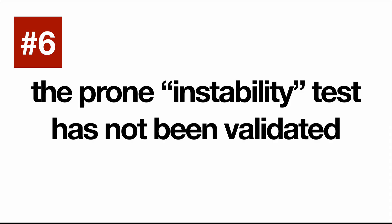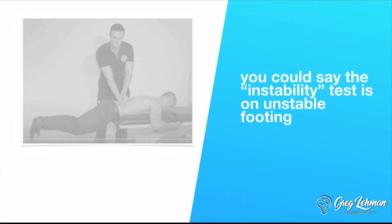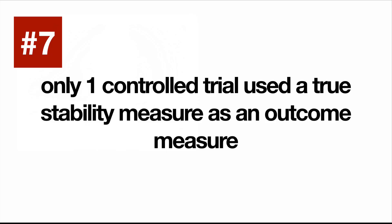Number six: the prone instability test, designed to find micro instability, has never been validated. It is merely a measure of symptom modification. It hurts when I poke you here; now you feel better when you lift your legs up. That just means you feel better — I did not measure instability. Perhaps you're just not moving that segment that once hurt. If your arm is in pain and you stop moving it, you don't say your arm was unstable.